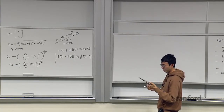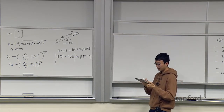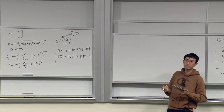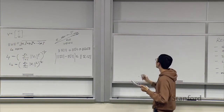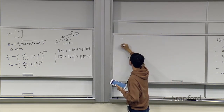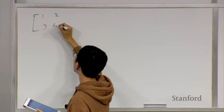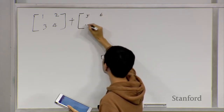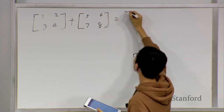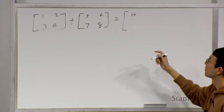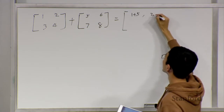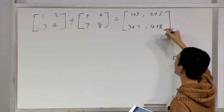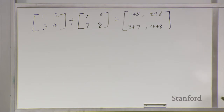Next, matrix operations. Starting with addition: to add two matrices, they must have the same shape. For example, the matrix [1,2;3,4] plus [5,6;7,8] gives you element-wise addition — one adds to five, two adds to six, three adds to seven, four adds to eight.